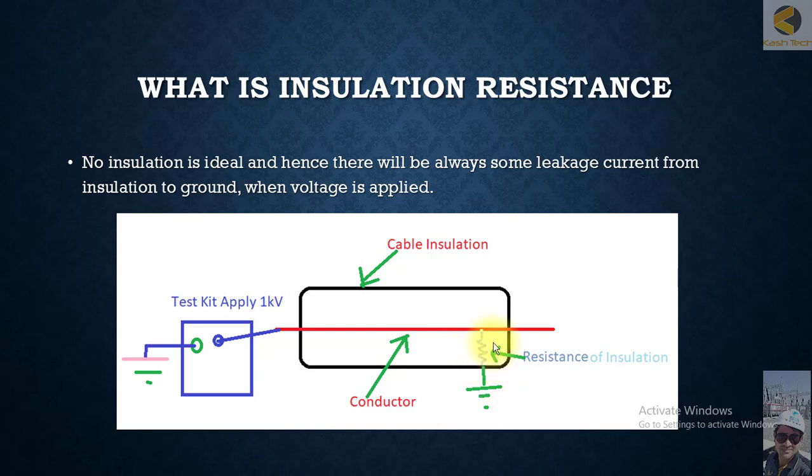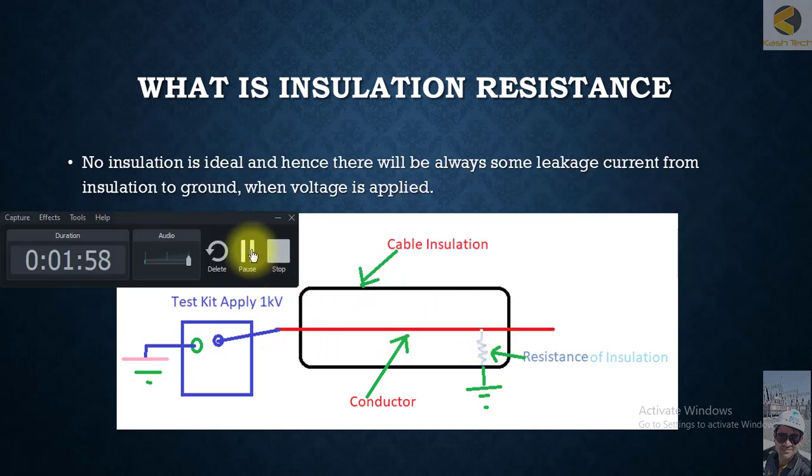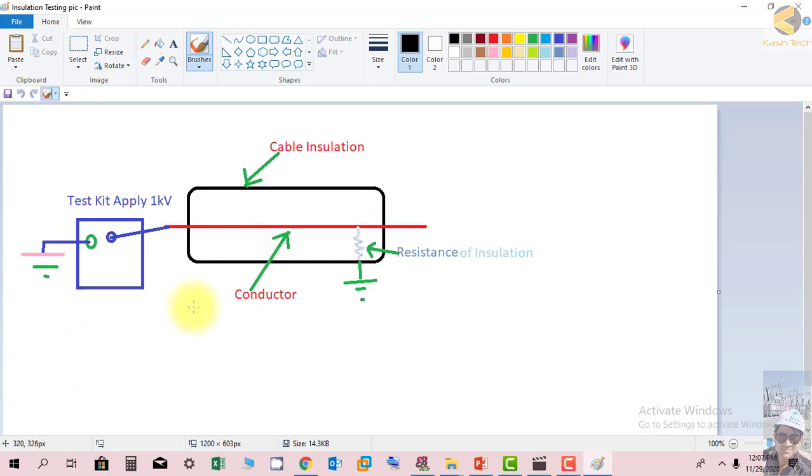We can say that the amount of current flow through the insulation depends upon the resistance of insulation, and the current that flows through the resistance is called leakage current. So let's now go to this picture.